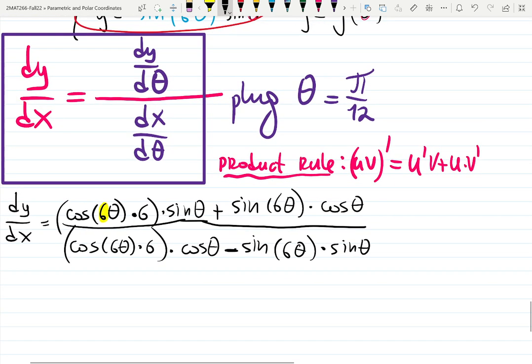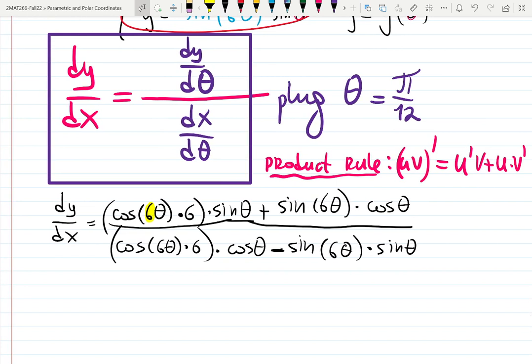Do you want to simplify this? No. And we don't have to. Just plug in pi over 12, get the answer. The notation is theta equals pi over 12, not over 2. Plug in pi over 12 everywhere.